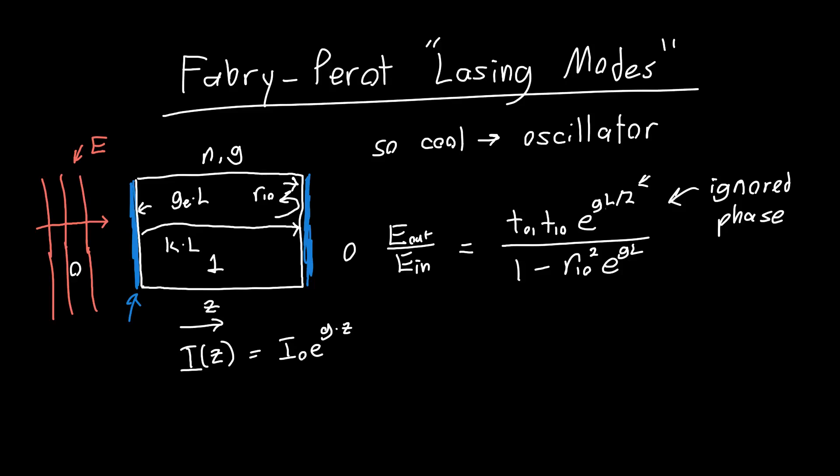And the total round-trip phase is just 2k times l. And so I'm going to call this phase, in general, phi. And let's define phi to just be 2kl, so the round-trip phase. Then we need to modify our expression.